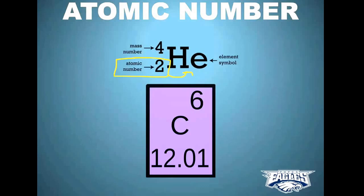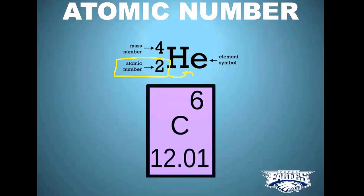Something that gets confusing on some periodic tables: sometimes you might see a number 6 and a number 12.01, and wonder which one is the atomic number and which one is the atomic mass. The smaller one is always going to be the atomic number. So if you see two numbers, it's always the smaller number. In this case, 6 would be the atomic number of carbon, telling you that carbon has 6 protons in it.